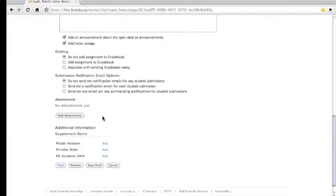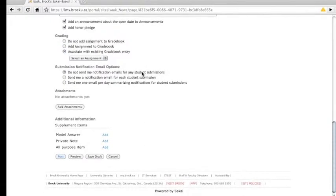Scrolling down, we have a section for grading. So we can associate this with an existing gradebook item or make a new one. Let's make a new one. And there's some options for notifications, spot to add more files, and model answers and other items. But I think we're ready to post this assignment.